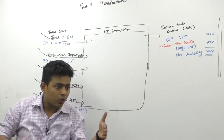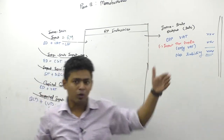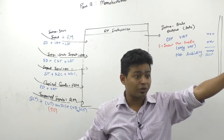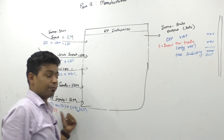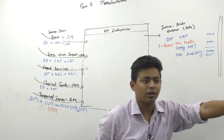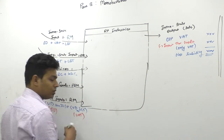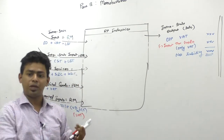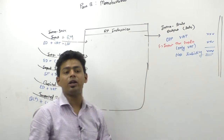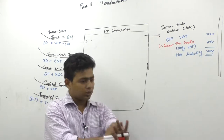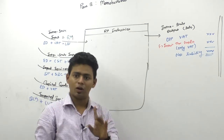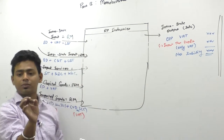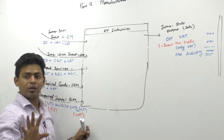Customs is not in your syllabus, but understand this much: CVD 3(1) represents excise duty, and CVD 3(5) represents VAT. Just understand that CVD 3(1) is excise duty and CVD 3(5) is the representative of VAT.